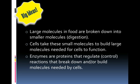Cells then take these small molecules to build large molecules needed for cells to function. So essentially point one is taking food molecules like proteins, sugars, lipids, and then breaking those down into the small monomer pieces like fatty acids and amino acids.